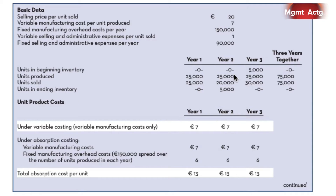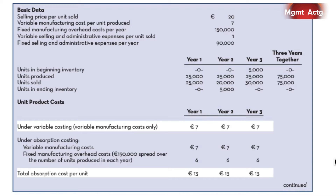In the second year, we're going to make 25,000 but only sell 20,000, which means 5,000 will be held back in inventory. Since this 5,000 will have the extra $6 in it, we would expect absorption costing will show a higher net income than variable costing. In year three, we still make 25,000, we sell all 25,000 plus the 5,000 from the year before. Because this 5,000 includes the overhead costs from the previous year, we would expect variable costing will show a higher income than absorption costing.